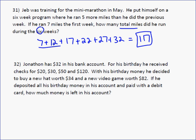Last one, it says, Jonathon has $32 in his bank account. For his birthday, he received checks for $20, $30, $50, and $120. With his birthday money, he decided to buy a new hat for $34, and a new video game for $82. If he deposited all his money in his account and paid with a debit card, which means it comes directly from his account, how much did he have left? Well, the amount in his account is adding how much he had plus how much he deposited, which was all these checks.